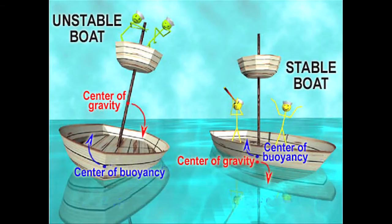Gravity plays an important role in keeping a boat stable and afloat. The center of gravity is directly opposite that of the center of buoyancy. That means that if the center of gravity is near the center of the object in question, then it will float.